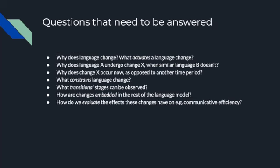These are the questions that need to be answered by any theory of language change: Why does language change? What actuates a language change? Why does language A undergo change X and similar language B does not? Why does change X occur now as opposed to another time period? What constrains language change? What transitional stages can be observed? How are changes embedded in the rest of the language model? And how do we evaluate the effects these changes have on, for example, communicative efficiency?